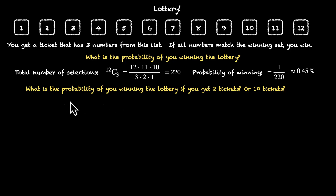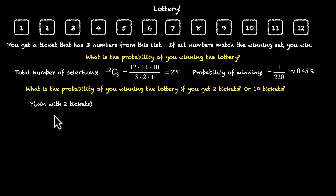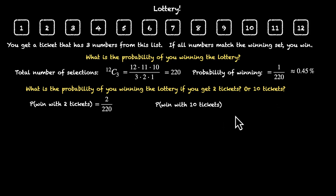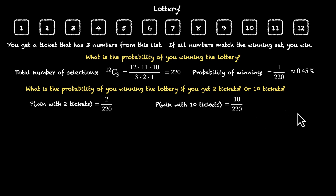Here's the next problem. What's the probability of you winning if you get not one, but two tickets or even 10 tickets? If we get two tickets, the probability of us winning is 2 divided by 220 — the probability doubles. Similarly, if we get 10 tickets, the probability becomes 10 times as large, giving 4.5%. With this logic, if we buy all 220 tickets, our probability is 220 divided by 220, which equals 1.